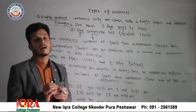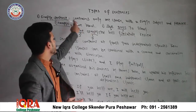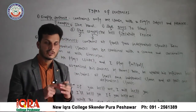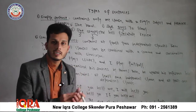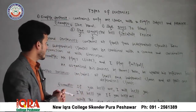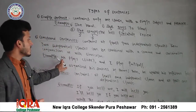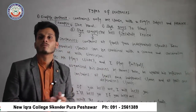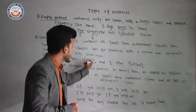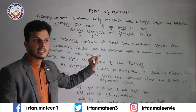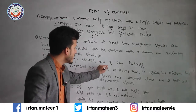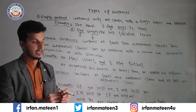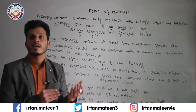Independent clause — jaise ke aap logo ko pata hai — simple sentence ke jo clause hote hain. Lekin compound mein do independent clauses hote hain, jo hum coordinating conjunction ke zariye join karte hain. For example: 'He plays cricket and I play football.' Woh cricket khelta hai aur main football khelta hoon. Is mein ek comma hai first independent clause ke baad, phir coordinating conjunction lagaate hain, aur phir second clause likhte hain.